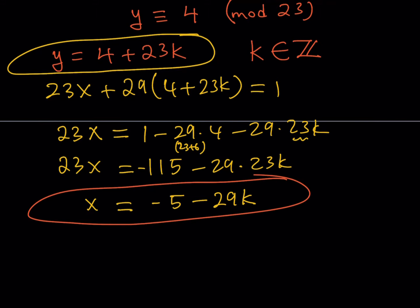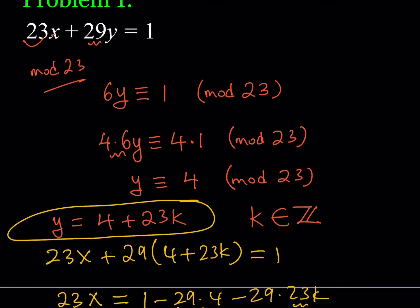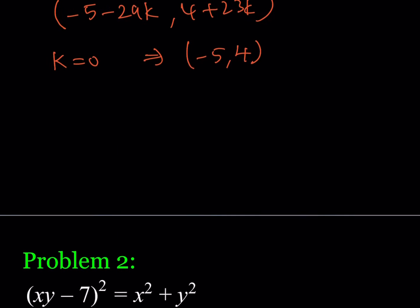We got all the solutions as an ordered pair. As k runs through all the integers, you get infinitely many solutions. For a particular solution, replace k with 0 and you get the ordered pair (−5, 4). Another method for this problem is the Euclidean algorithm combined with Bézout's theorem, since gcd(23, 29) = 1, which verifies the original equation.